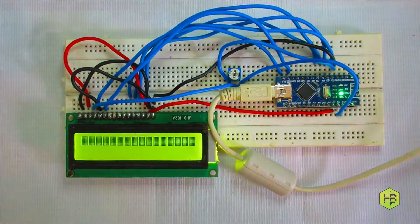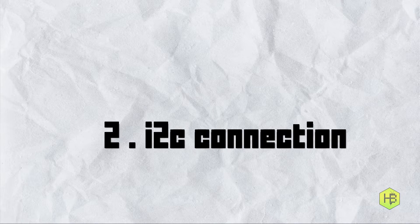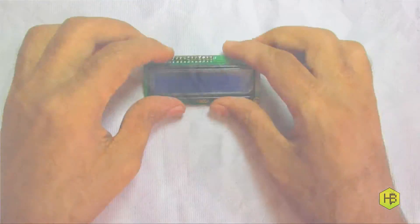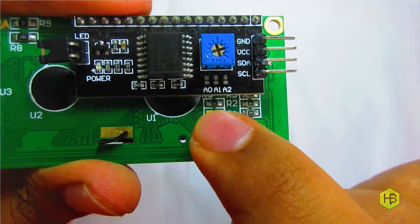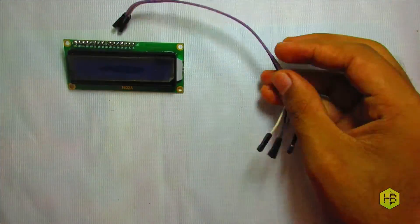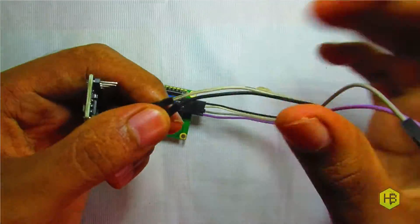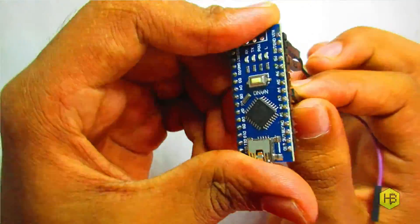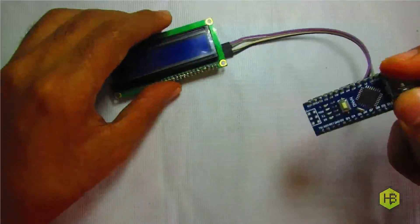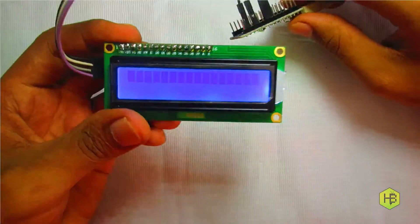Now we have the I2C connection. This is the I2C module with IC PCF8574. We can do the wiring: VCC, GND, SDA, and SCL. SDA and SCL are connected to Arduino pins A4 and A5, which are the serial data and serial clock pins.